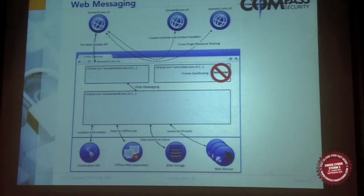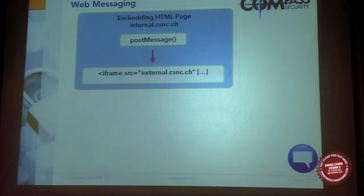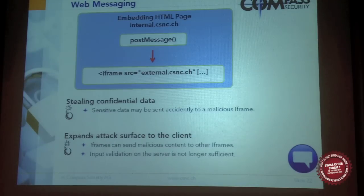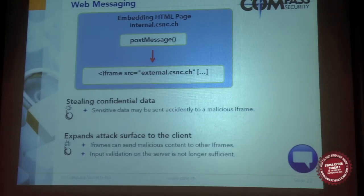Next feature: web messaging. This was completely new — it allows iFrames from different origins to communicate with each other, entirely within the victim's browser. The problem is that sensitive data could be stolen if a message is accidentally sent to a malicious iFrame. It completely expands the attack surface from the server to the client. For example, a malicious iFrame could send malicious JavaScript content to another iFrame where it gets executed in that site's context. This requires input validation on the client itself — server-side input validation alone is not sufficient.